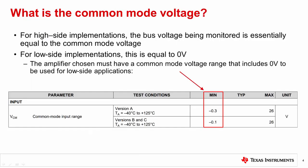Next, let's revisit the input common mode voltage range. If you're measuring on the high side, the common mode voltage is typically the bus voltage being monitored. You need to choose an amplifier that includes this high voltage plus any needed margin within its common mode voltage range.